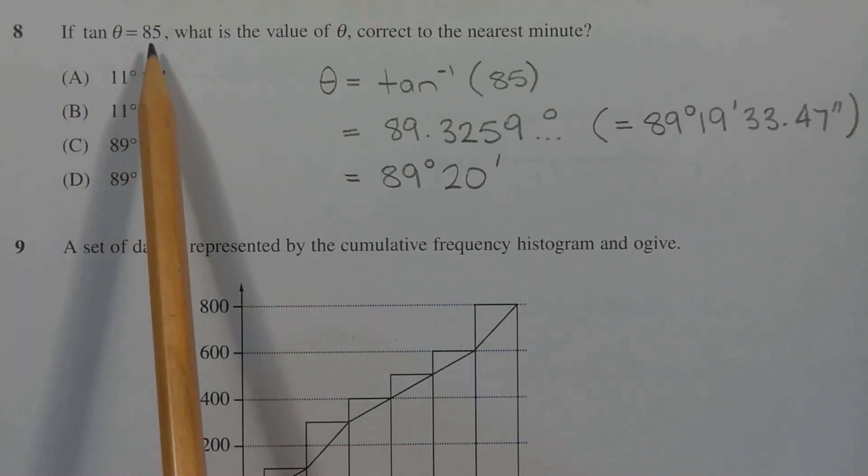Now, when tan theta equals 85, what that means is the length of the opposite side in a right angle triangle is 85 times as long as its adjacent side. The question, though, is asking for the value of theta or the angle that is formed when the opposite side is 85 times as long as the adjacent side.